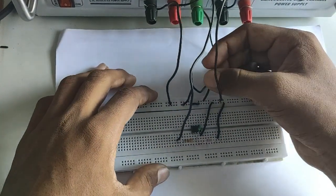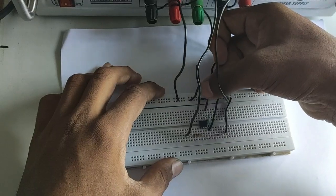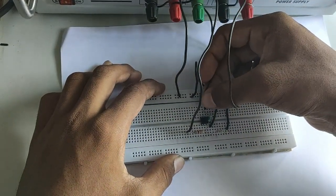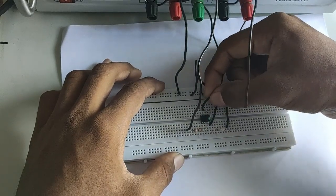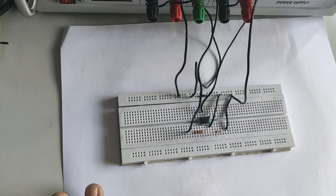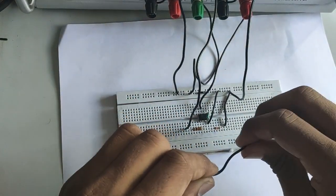The 7th pin of the IC741 must be given with 12V of supply. The negative is already grounded.